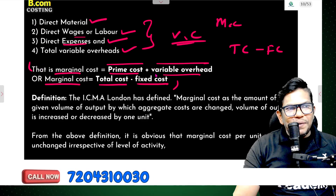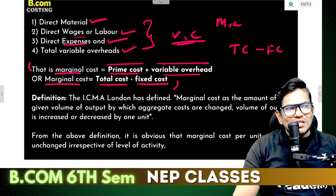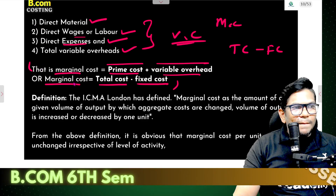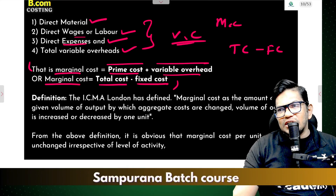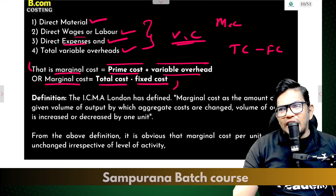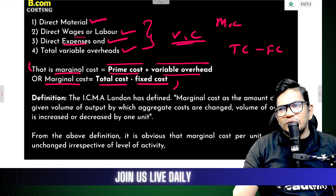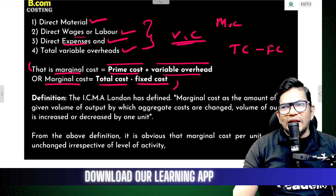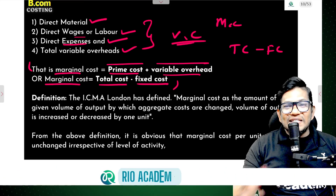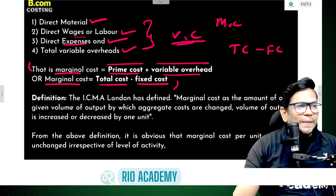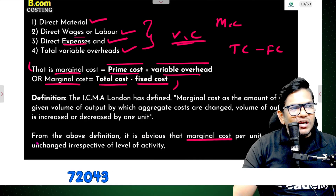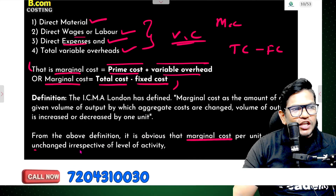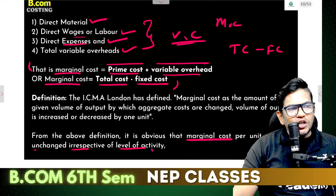Prime cost plus variable cost is marginal cost. Marginal cost is equal to total cost minus fixed cost. Marginal cost per unit remains unchanged irrespective of level of activity.